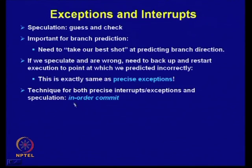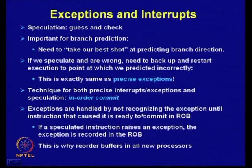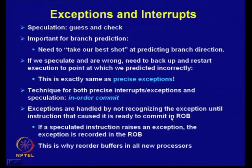By using in-order commit, we are able to overcome precise interrupts and exceptions. Exceptions are handled by not recognizing the exception until the actual instruction that caused it is ready to commit in the ROB. Whenever an exception is detected, it is kept pending until it reaches the commit stage. If an instruction is discarded before committing, the associated exception is also discarded — if a speculated instruction raises an exception, the exception is recorded in the ROB.